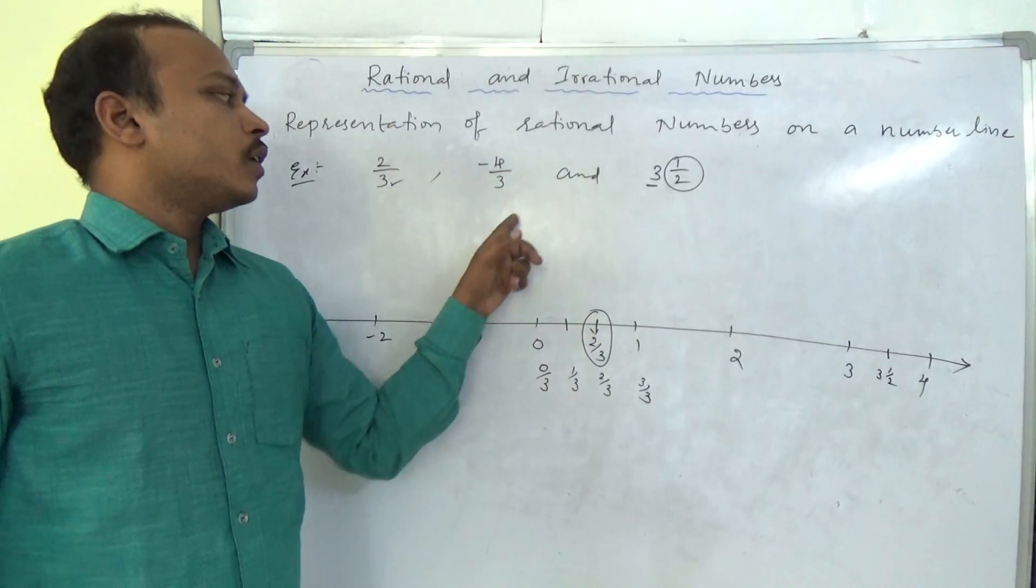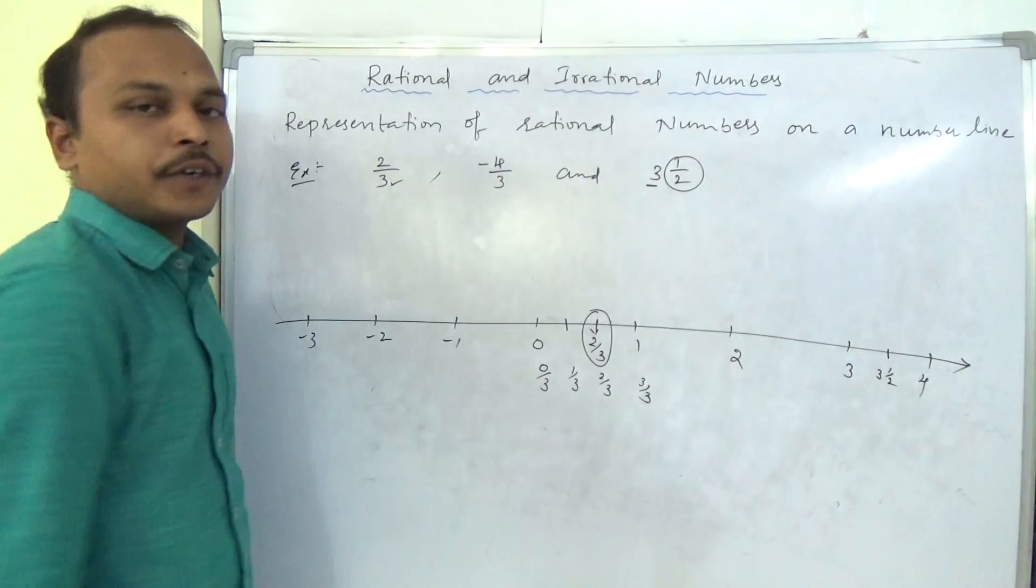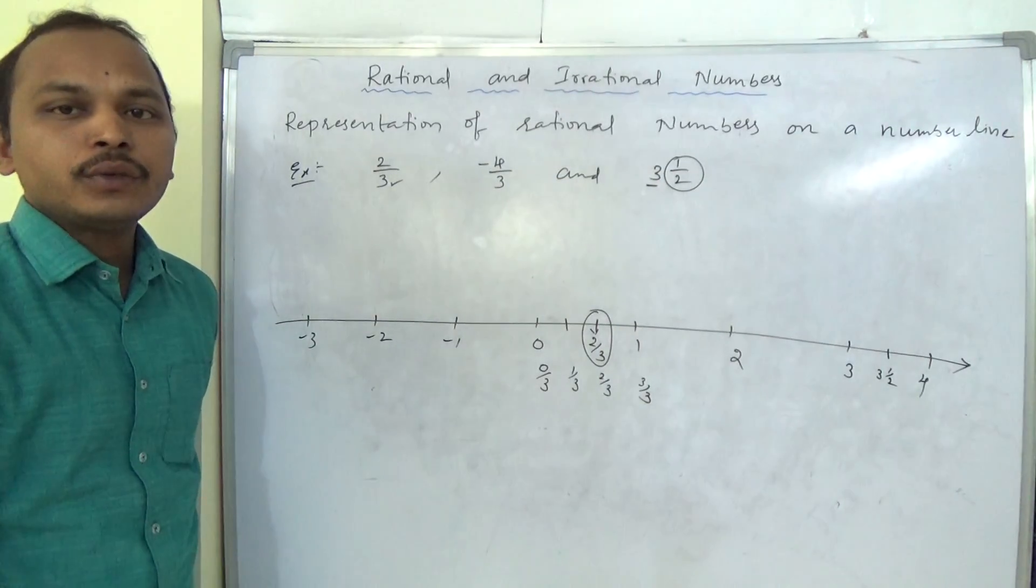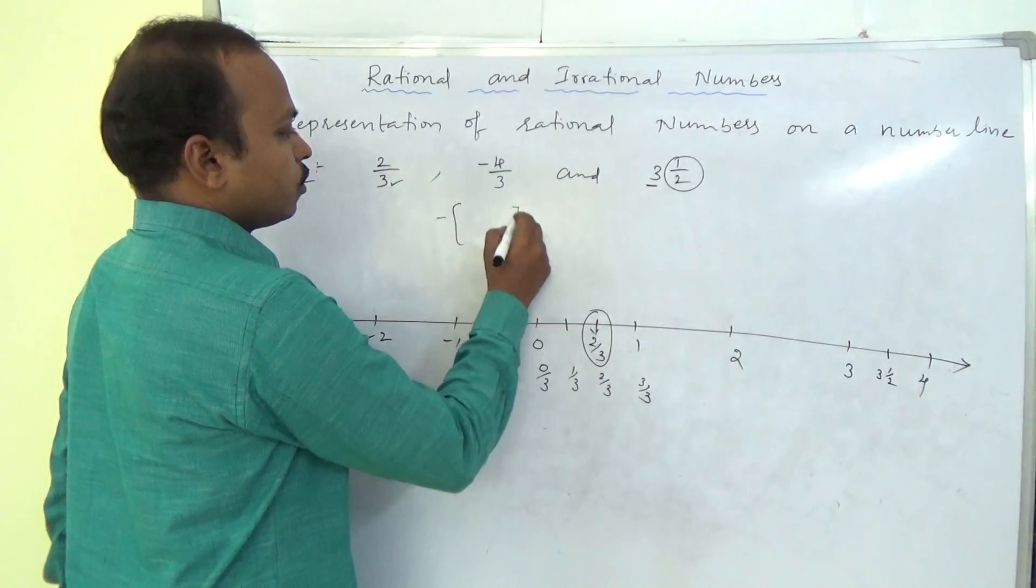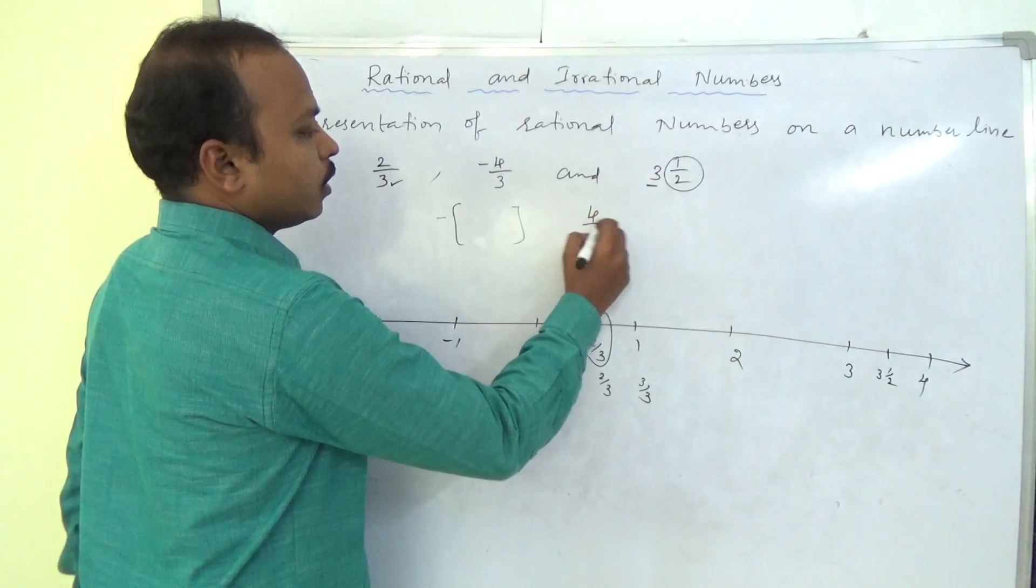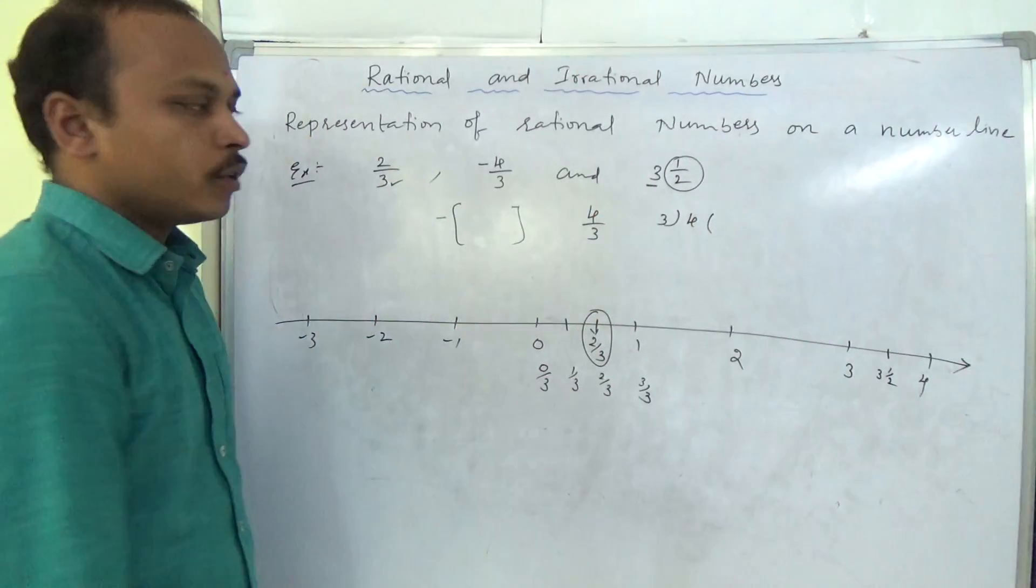Whenever they are giving improper fraction, we should convert into mixed fraction first. Minus 4 by 3, minus of 4 by 3. 4 divided by 3. Do division and convert into mixed fraction.